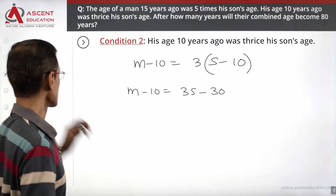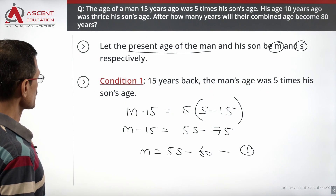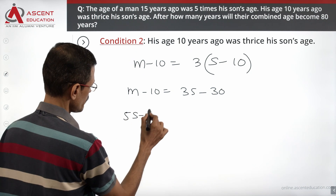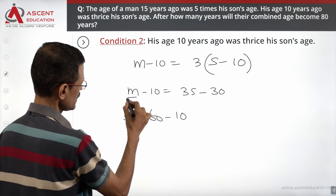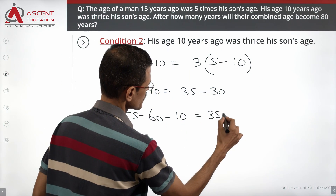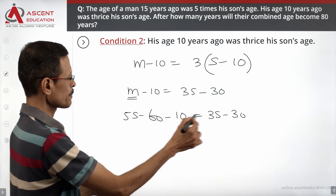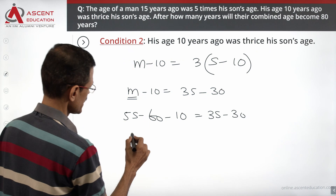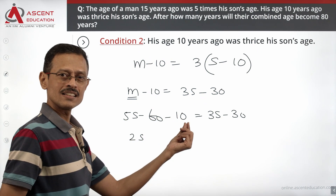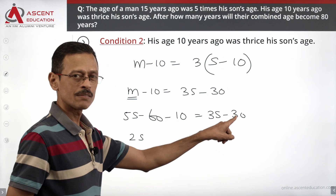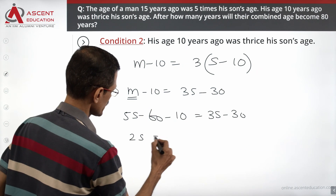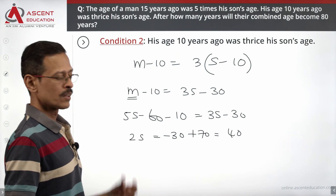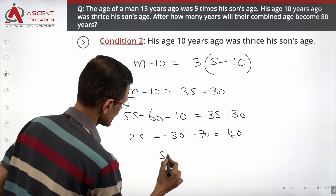We know from equation 1 that m equals 5s minus 60. Substituting into the second equation: 5s minus 60 minus 10 equals 3s minus 30. That gives 5s minus 70 equals 3s minus 30. Taking 3s to the left hand side: 5s minus 3s equals 2s. And moving minus 70 to the right: 2s equals minus 30 plus 70, which equals 40. So 2s equals 40, meaning s equals 20.